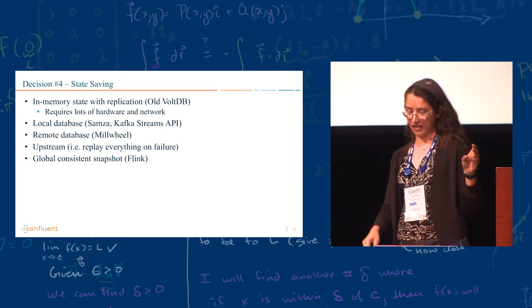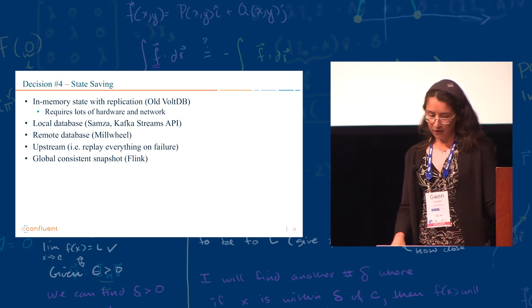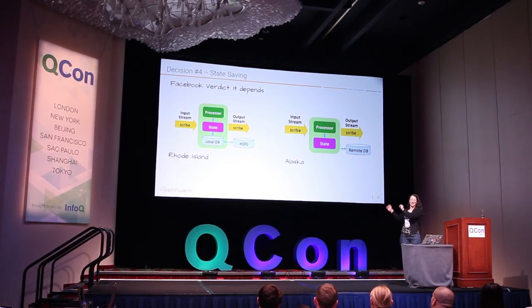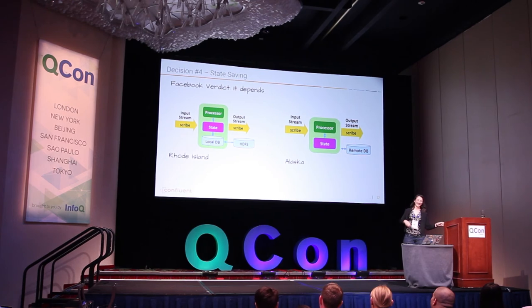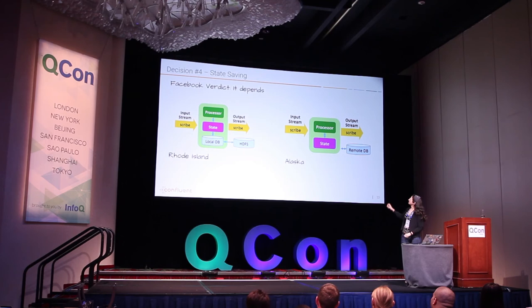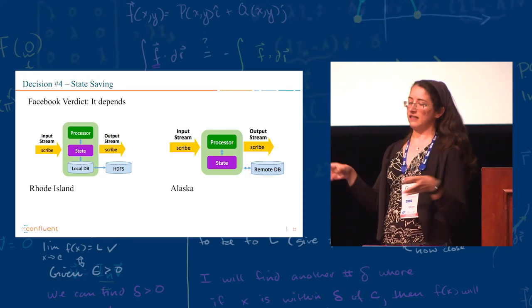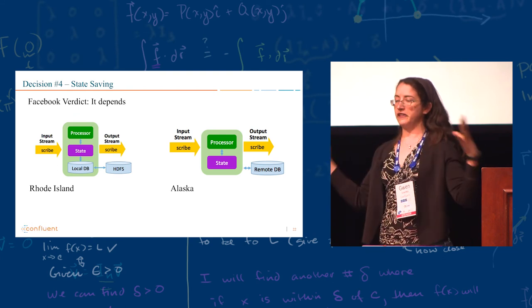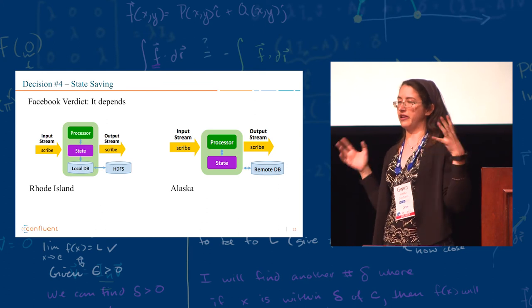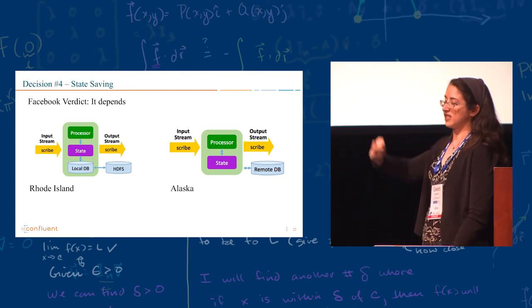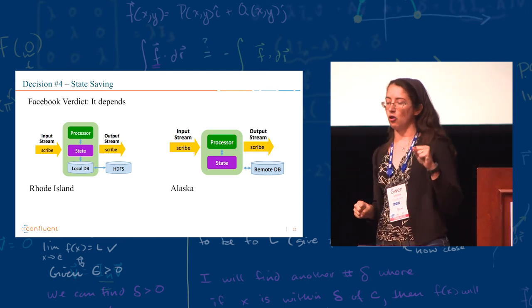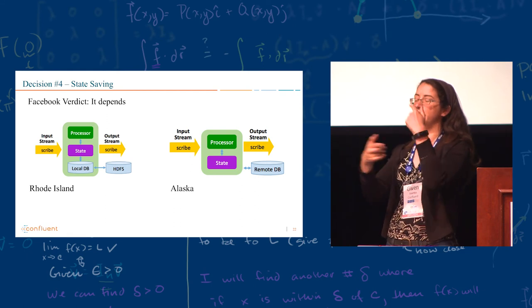And then you can also do globally consistent snapshots. Facebook decided on two options. I say Rhode Island and Alaska because it's like small state versus large state. So if you have a small state, you can maintain it on a local database and then they back it up to HDFS. They use RocksDB as the local database. If you have very large state, you cannot really store it locally. You won't have enough memory. You won't have enough space. So you're going to send it to a remote database and you're only going to cache a very small subset of your state locally.